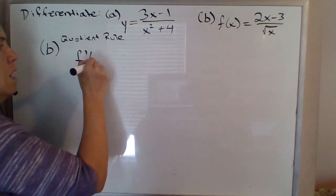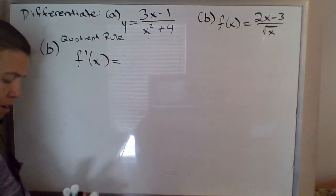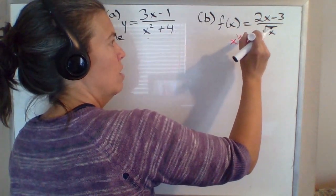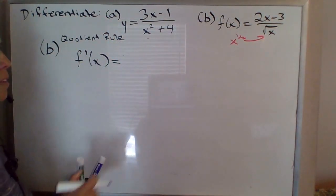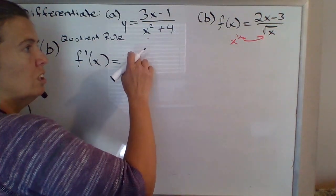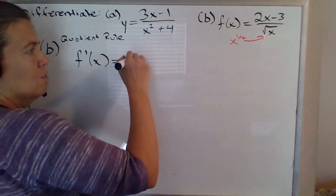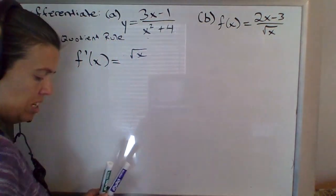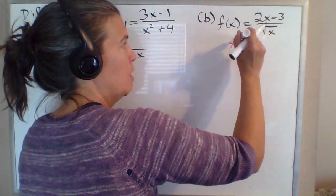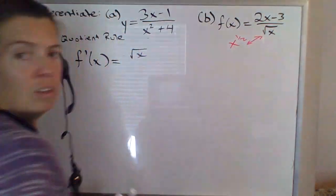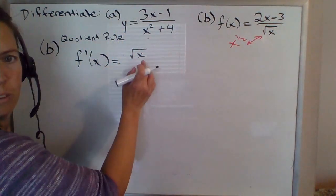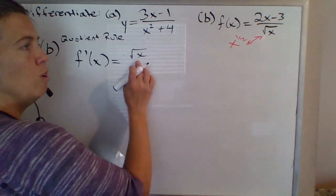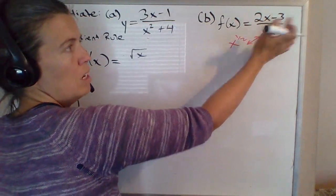So f prime of x — bear in mind, as we do this, that the square root of x is the same as x to the 1 half. So if we do the bottom function, I'm just going to write square root of x. I may go back and forth between x to the 1 half and square root of x, just whatever seems more effective. So bottom function times derivative of the top — derivative of the top is just 2 times 1 minus 0, so just 2.